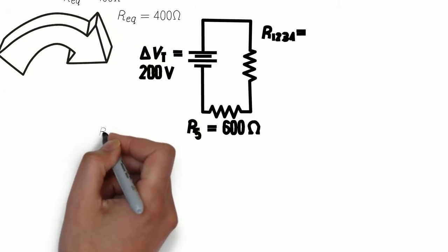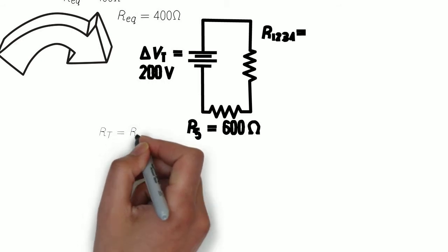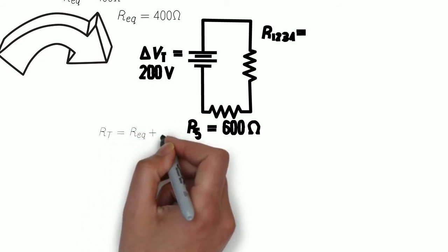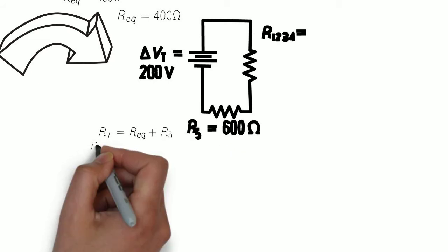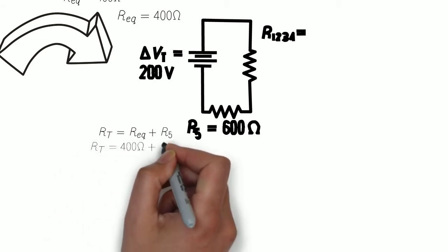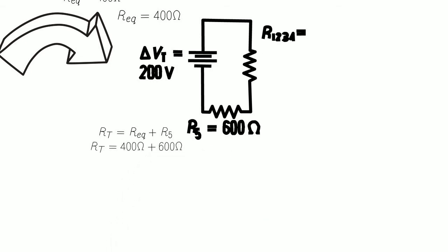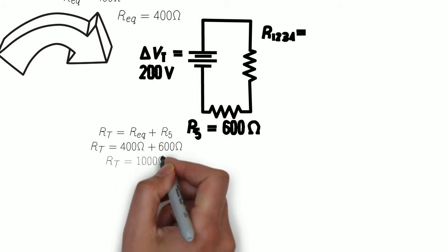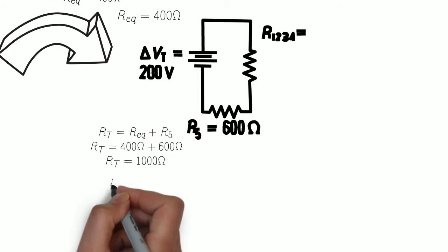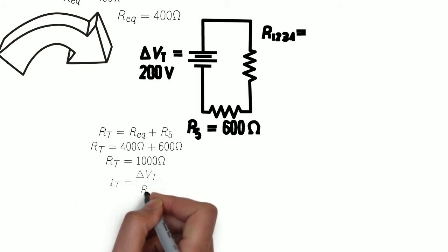And this leaves us with a very simple series circuit, where we can solve for the total resistance as REQ plus R5, which gives us a total resistance of 1000 ohms. Knowing the total potential difference, we can now use Ohm's law to calculate the total current in the circuit, which gives us a total current of 0.2 amps.